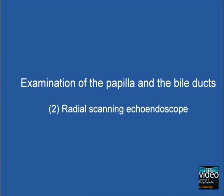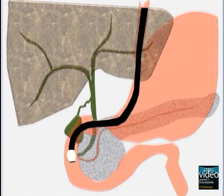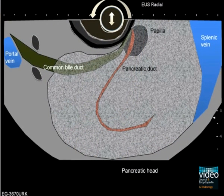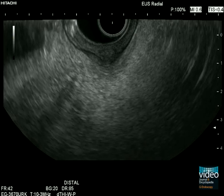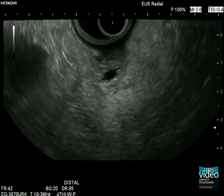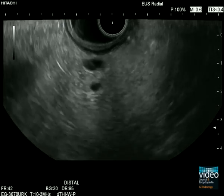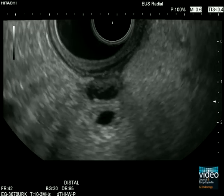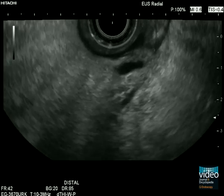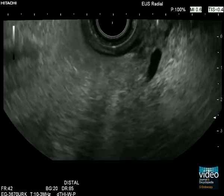Now we examine the bile ducts using a radial scanning echoendoscope. Again, we start at a position perpendicular to the papilla. The pancreatic duct runs away from the transducer through the pancreatic head. The course of the bile duct is directed onto the liver hilum at the left side of the screen. The radial scanner is located in the descending duodenum. Air is aspirated, and the scope slowly pulled back until it is in a straight position. Then the balloon may be slightly inflated. Very cautious forward and backward movements of the scope are necessary to focus the transducer to the papilla. The distal bile duct near the transducer, as well as the pancreatic duct distant to the transducer, appear in a cross or oblique section.